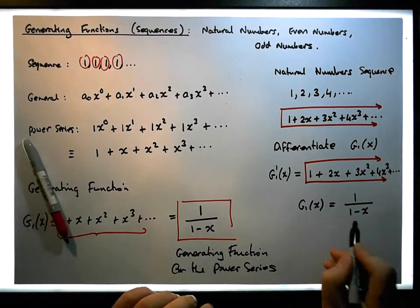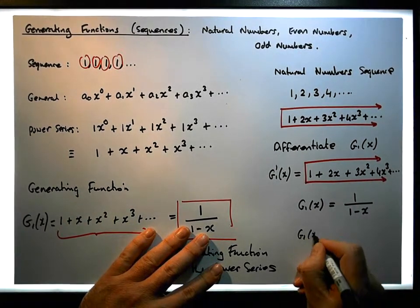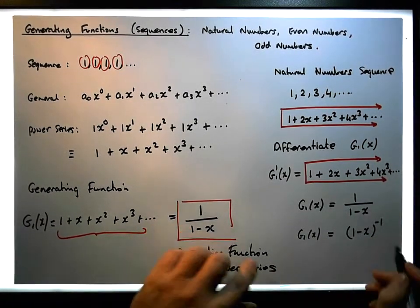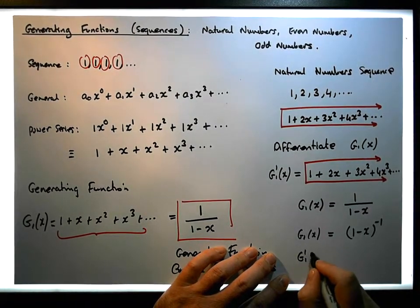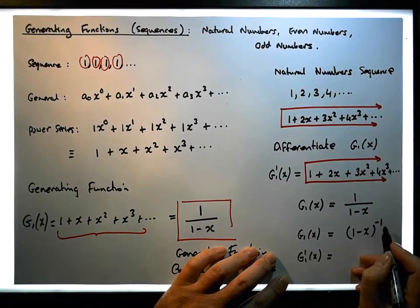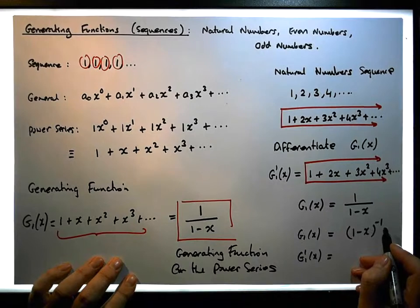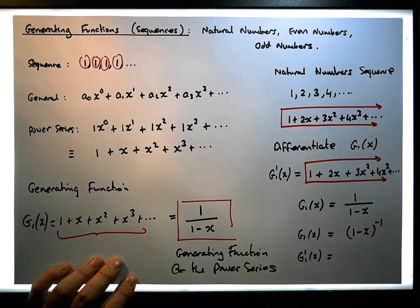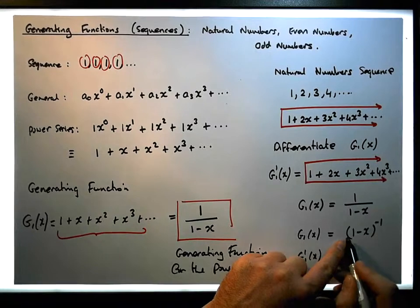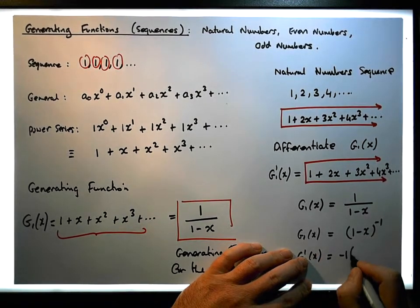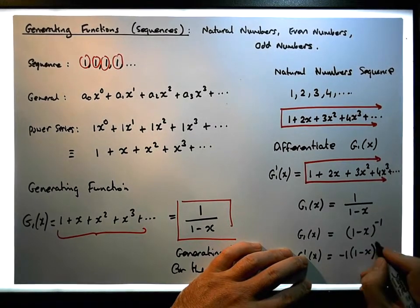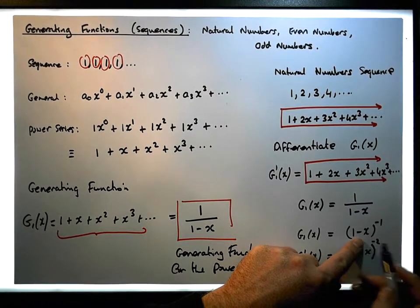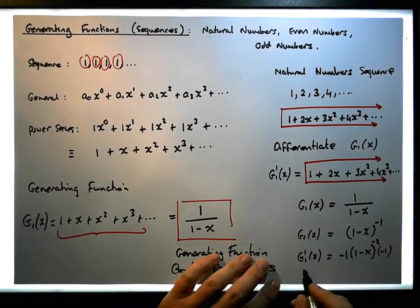Another way to write g1 of x is as 1 minus x to the power of minus 1. We can use the chain rule: the derivative g1 prime of x is minus 1 times 1 minus x to the minus 2, multiplied by the derivative of the inside. The derivative of minus x is minus 1.